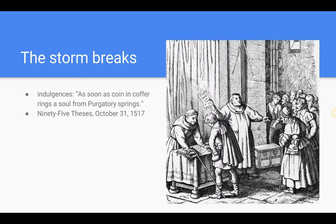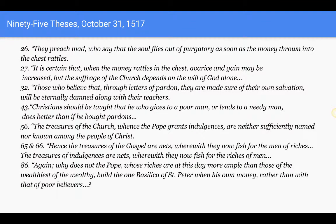Now Luther was then a professor in nearby Wittenberg, Saxony, not far from the home of the Hussite heresy in Bohemia. When some local people showed him the indulgences they had bought, he denied they were valid. Tetzel denounced Luther for this, and Luther took up the challenge. On October 31st, 1517, Luther nailed a placard to the church door in Wittenberg. On it were the 95 theses, or statements, criticizing various church practices, some of which are given here.